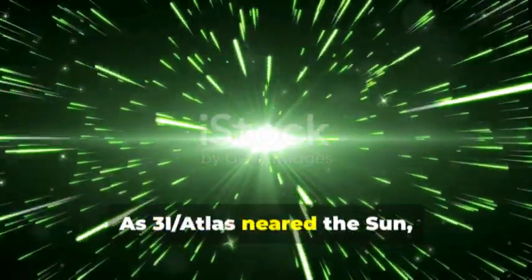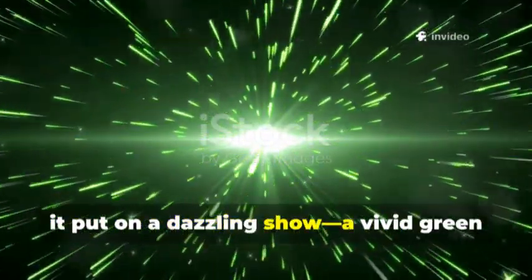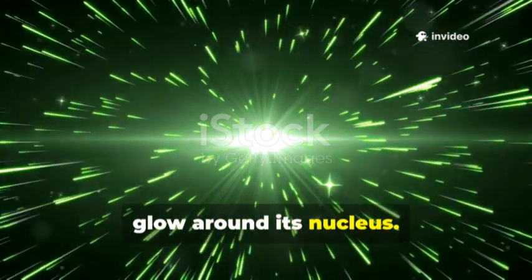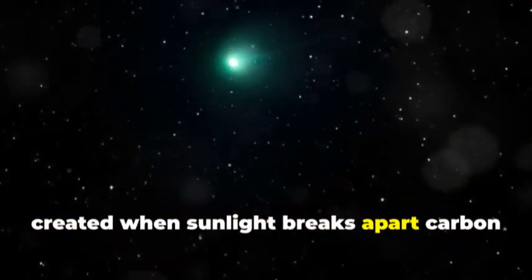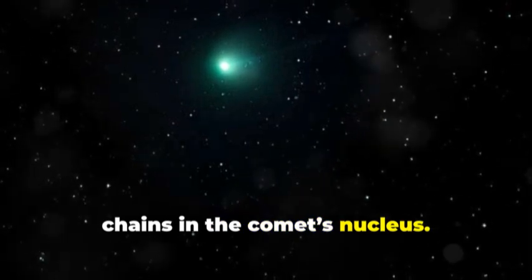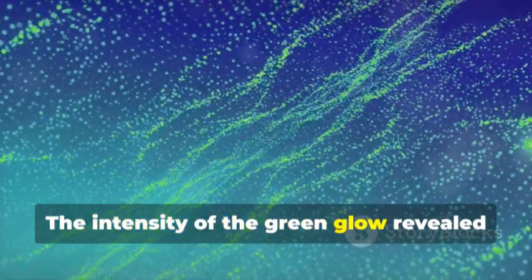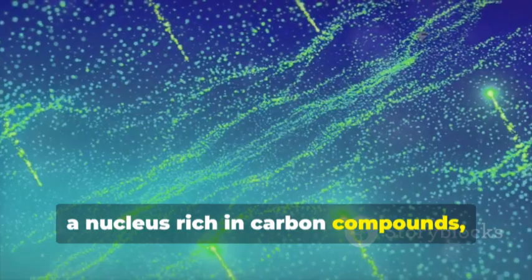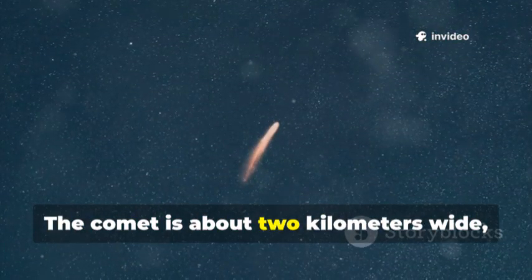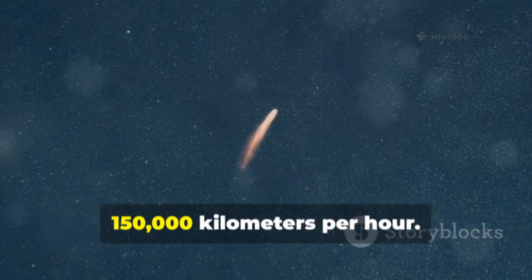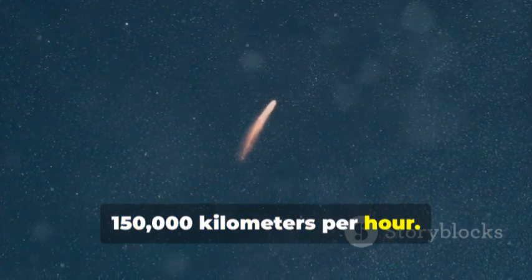As 3i-Atlas neared the sun, it put on a dazzling show, a vivid green glow around its nucleus. This color comes from dicarbon gas, created when sunlight breaks apart carbon chains in the comet's nucleus. The intensity of the green glow revealed a nucleus rich in carbon compounds, hinting at a unique formation environment. The comet is about 2 kilometers wide, racing through the solar system at over 150,000 kilometers per hour.